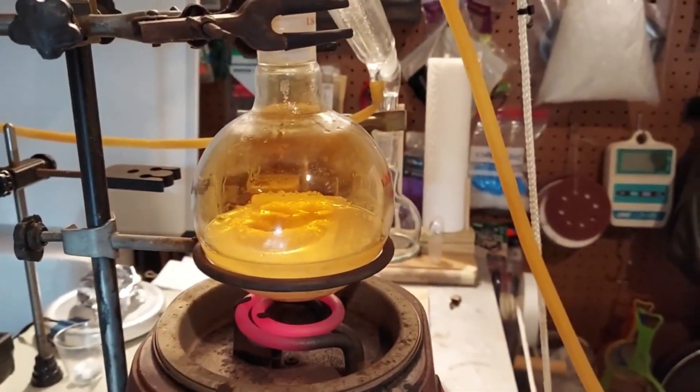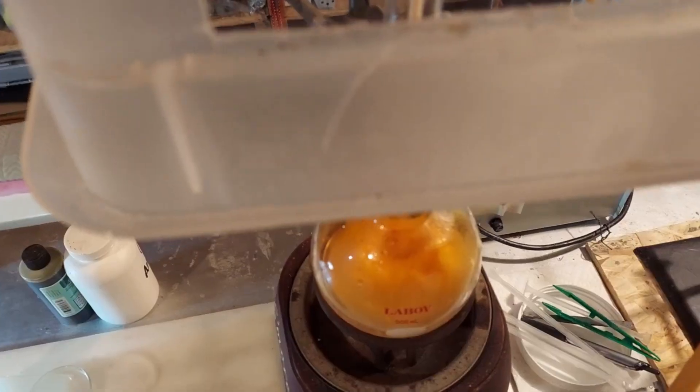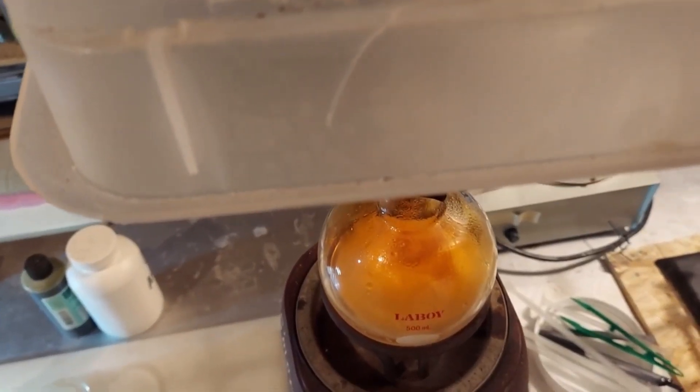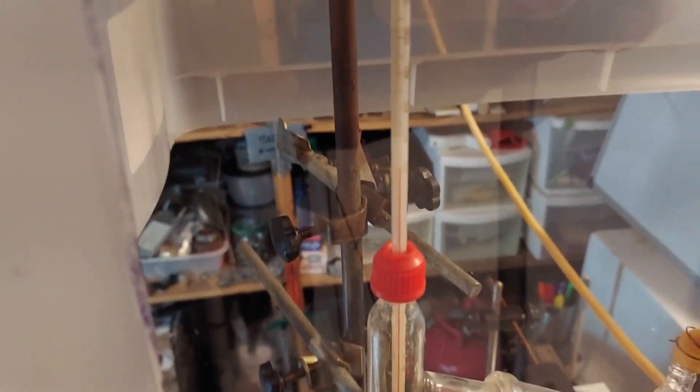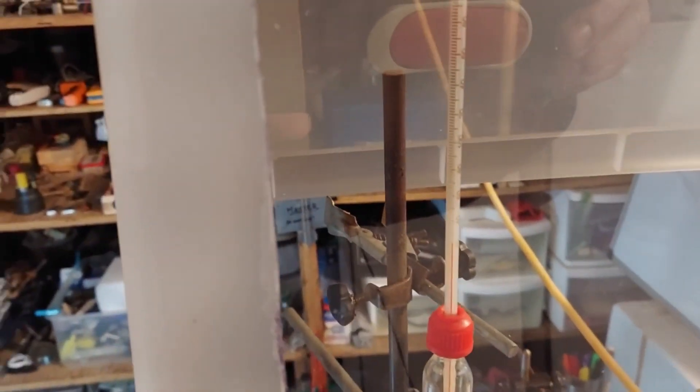We can see that even though there's a reaction taking place down there, our temperature has not changed that much at all. So we need that to get to that 83 degrees, and it'll start dripping over into that flask. That'll happen naturally. There's nothing else I need to do.